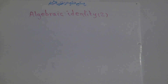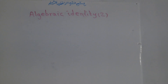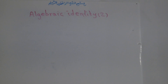Hi there, welcome to math class. Our title is Algebraic Identity number two. In the previous lesson we discussed about the identities and we said that the identity is very important in algebra, like the multiplication table in mathematics. This is also very important.